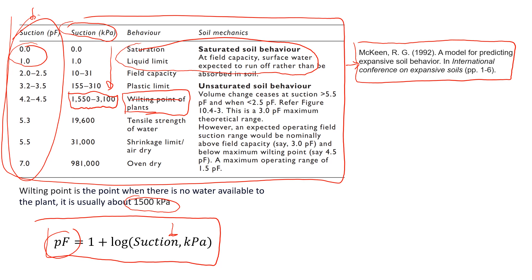When it reaches this value, this means that these roots cannot actually get any water from the soil. Now let's do this exercise and let's estimate value of pF for suction when we have suction of 1500 kPa. In this case, we just use the formula. This value of pF will be 1 plus log of 1500.